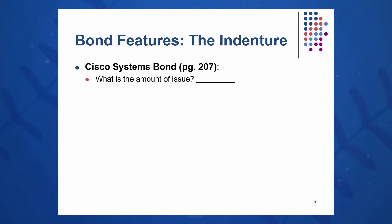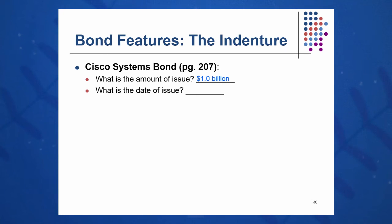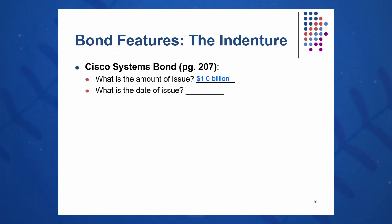On page 207, we see an example indenture — the terms of the bond that you will sign whenever you buy the bond. In this case, the author looks at Cisco Systems. First of all, what's the amount of the issue? One billion dollars. So one billion dollars will go on to Cisco Systems — you know them as a maker of large computer equipment, routers and so on. One billion dollars they are borrowing from investors in the form of a bond. This will go on their balance sheet under long-term debt, and their annual interest payments or coupons will show up as interest expense on the income statement.